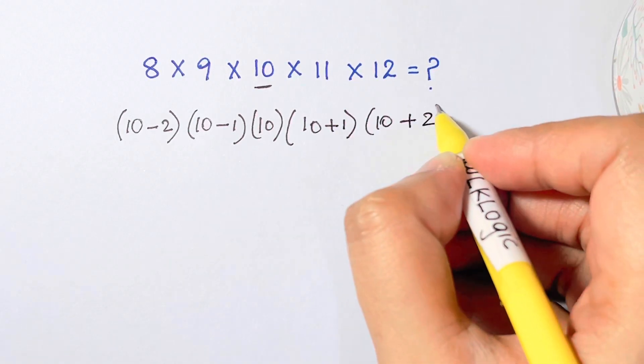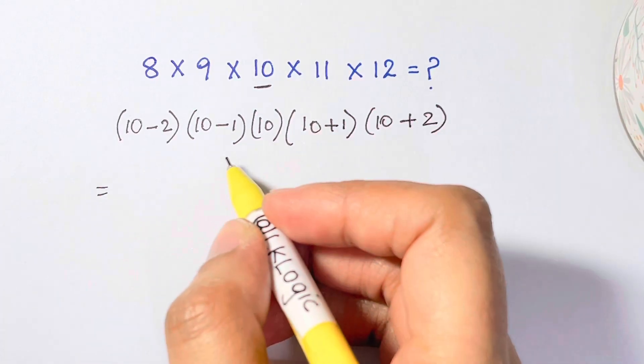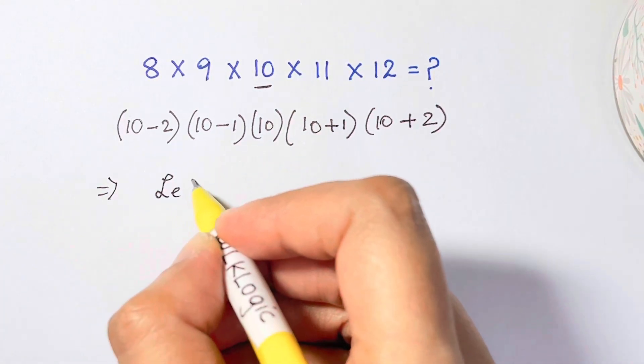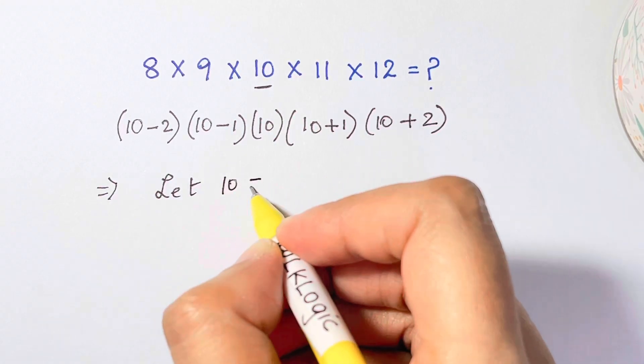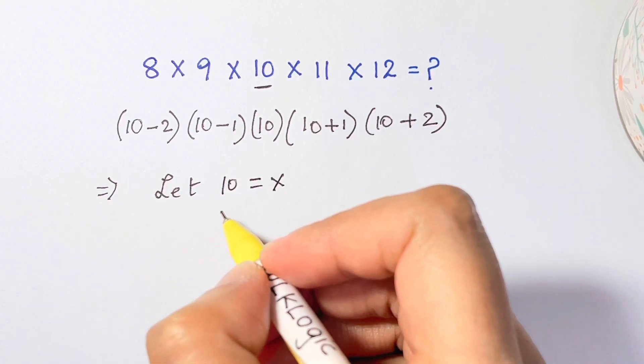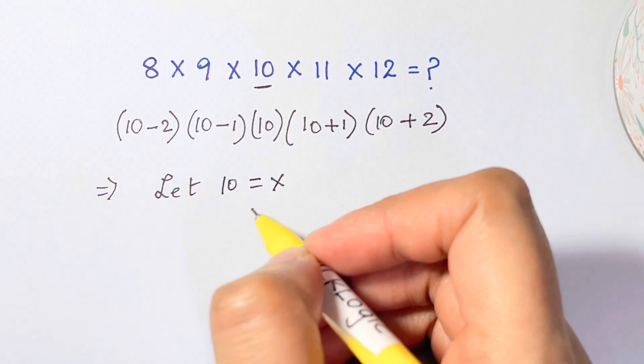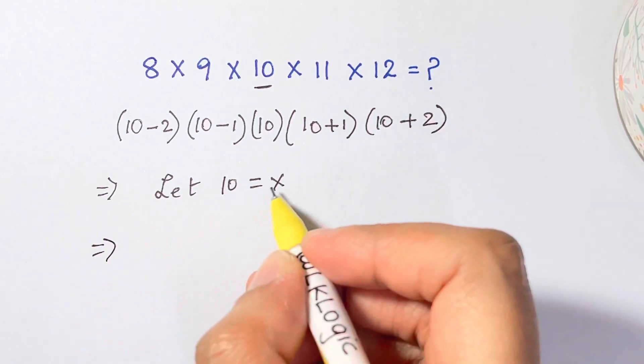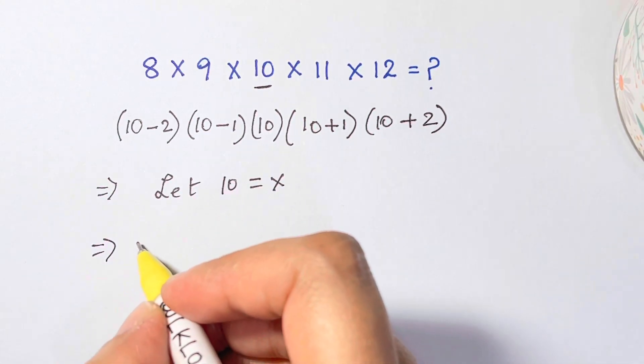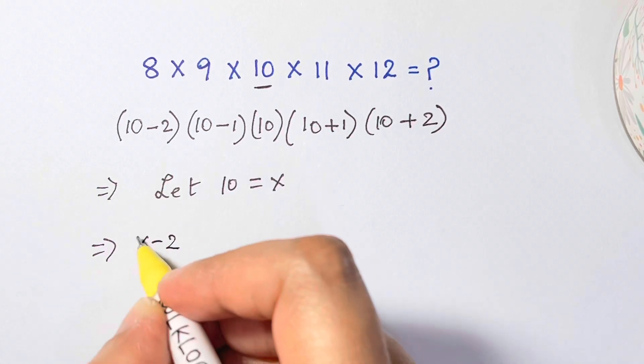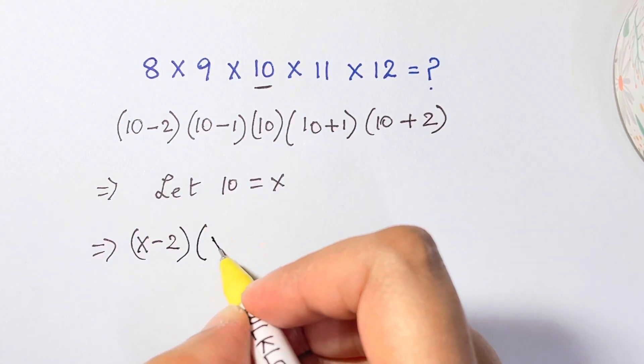Now what we're going to do is let 10 equal x, so x = 10. Here we're going to substitute x in place of 10, so we have (x - 2) times (x - 1) times x and then (x + 1) and (x + 2).